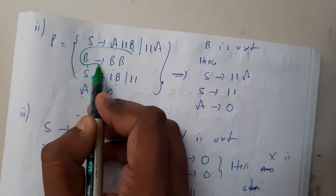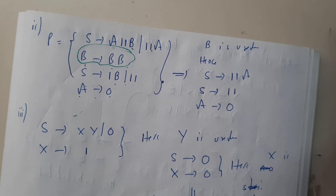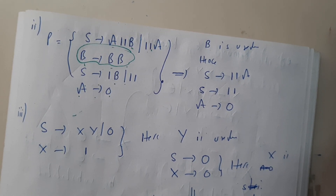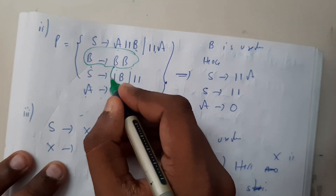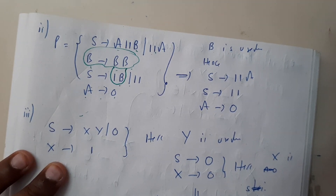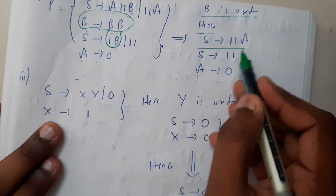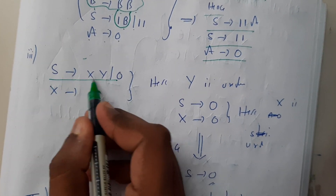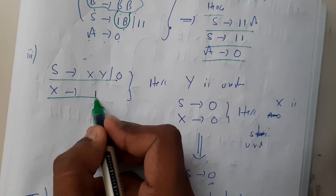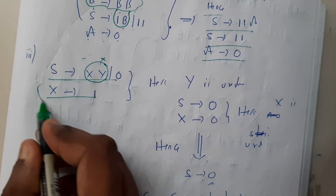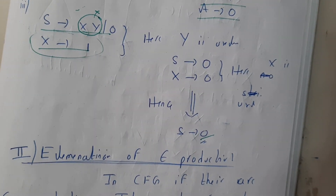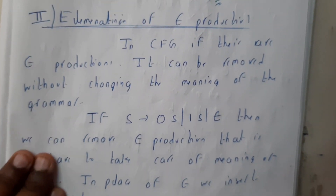If you observe, B tends to BB — what is the use of it? It makes the grammar go into an infinite loop, so we should remove this as well. B is useless; once we remove it we are left with only a few productions. Further, X tends to XY and OXY — this Y is of no use so we remove it completely. Hence the grammar reduces to S tends to 0.